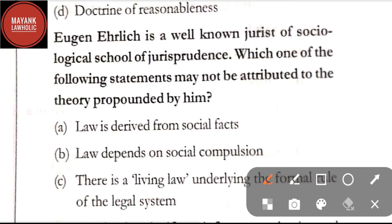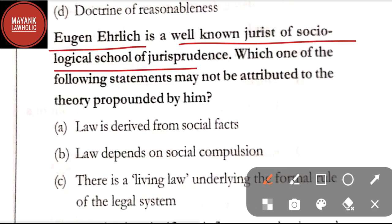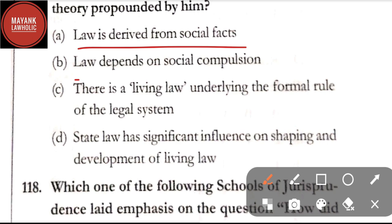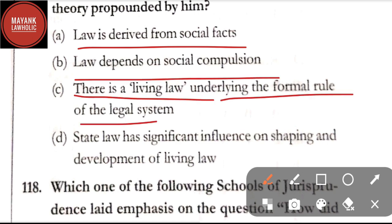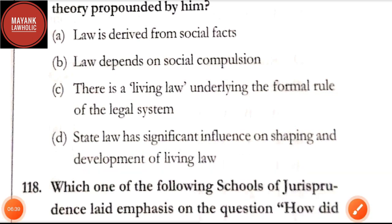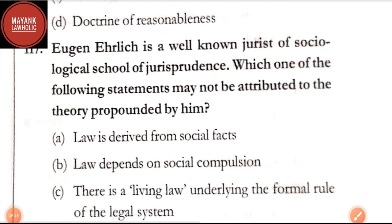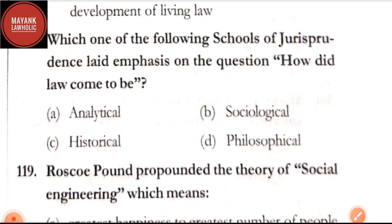Question number 117: Eugen Ehrlich is a well-known jurist of sociological school of jurisprudence. Which one of the following statements may not be attributed to his theory — option A: law is derived from social facts; option B: law depends on social compulsion; option C: there is a living law underlying the formal rule of the legal system; option D: state law has significant influence on shaping and development of living law. The correct answer is option D — this is not attributed to Ehrlich's theory, whereas options A, B, and C are related to him.